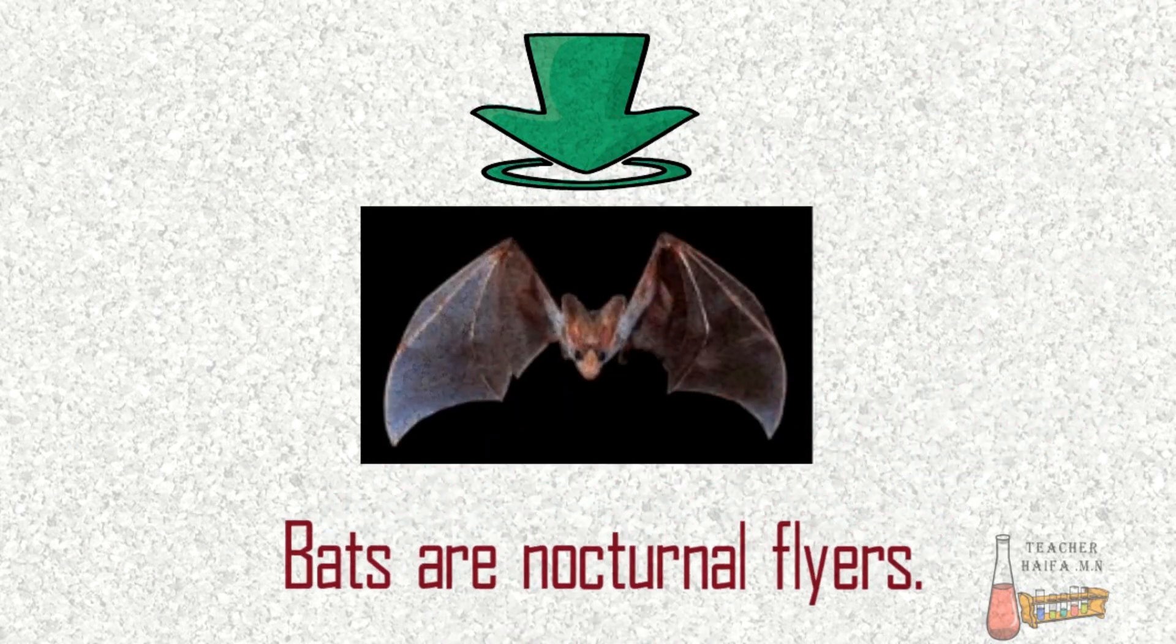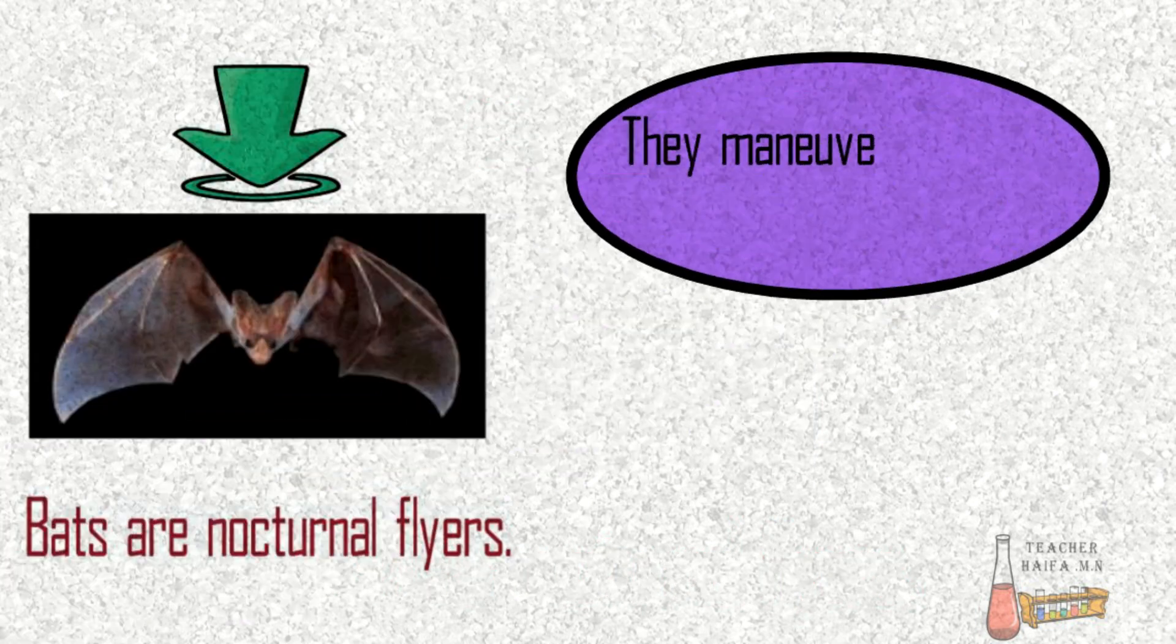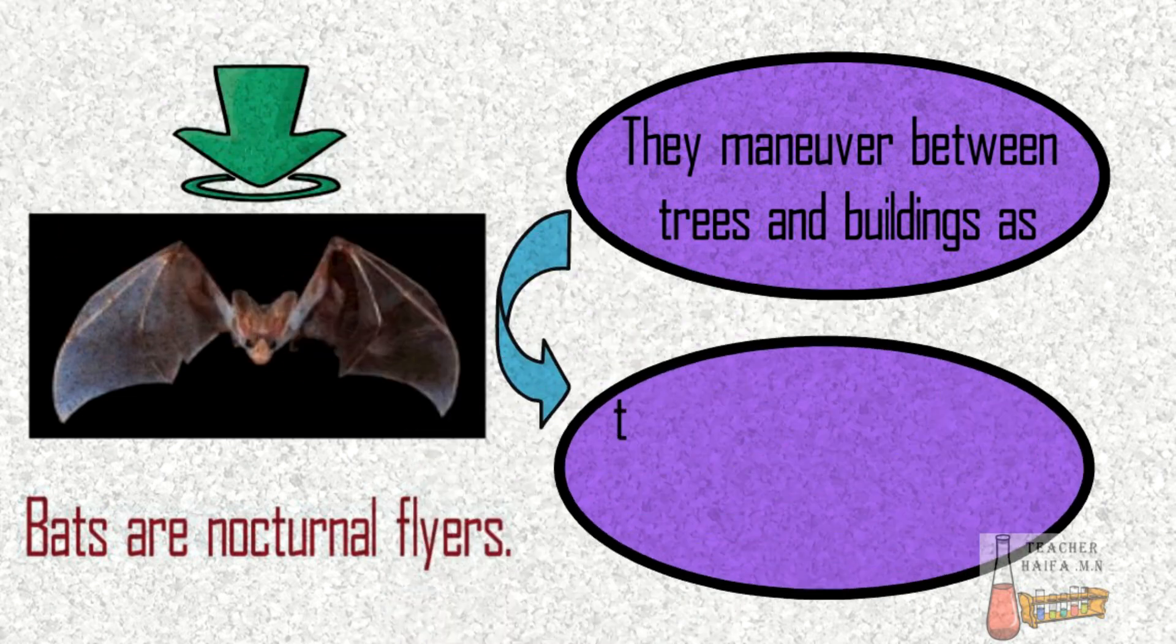Bats are nocturnal flyers. They maneuver between trees and buildings as they look for food and find roosts in the dark.